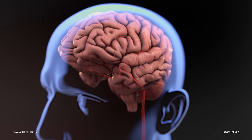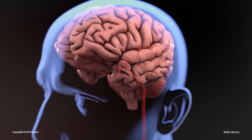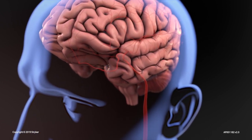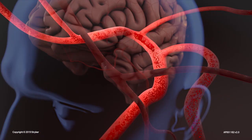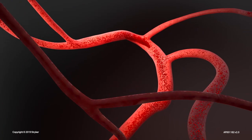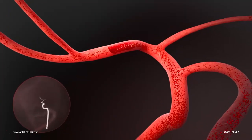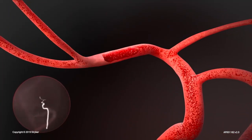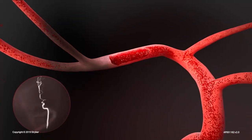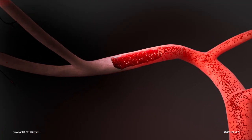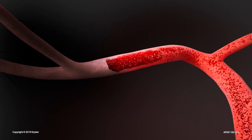A person experiences an ischemic stroke when a blood clot travels into the brain and blocks a blood vessel. This can cause symptoms such as weakness, paralysis, loss of speech, or dizziness.